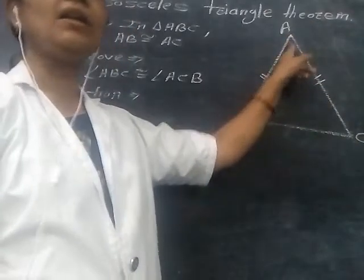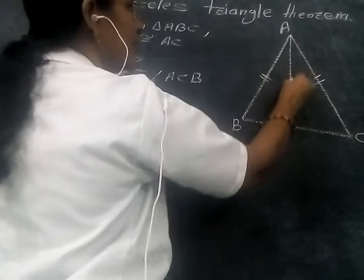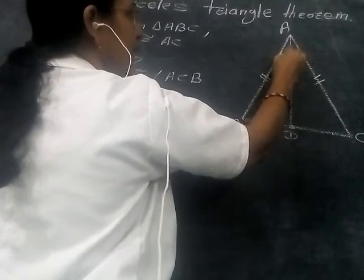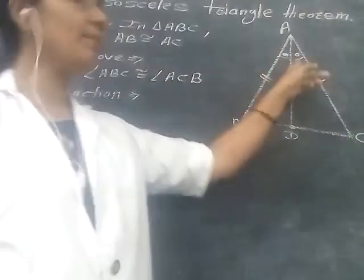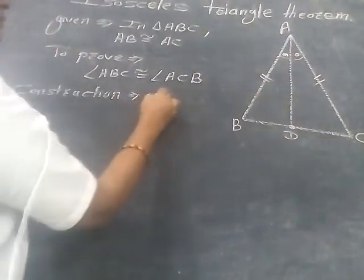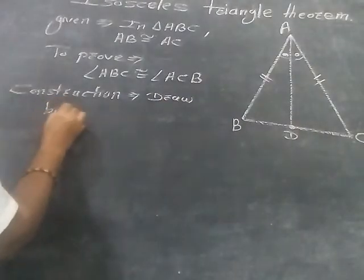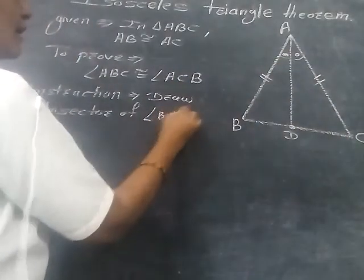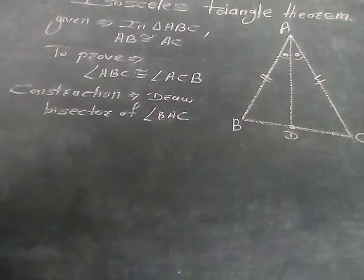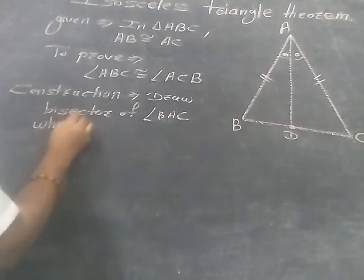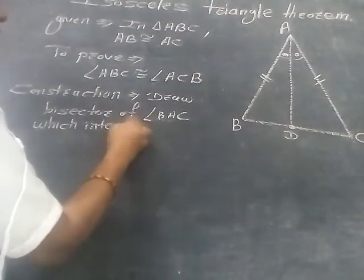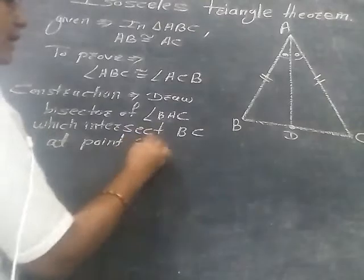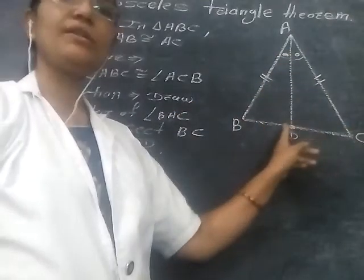This is angle BAC. So we bisect this angle. Suppose this is the bisector, which intersects BC at point D. This is the bisector, so these two angles are congruent because this is the bisector. So here we write: draw bisector of angle BAC, which intersects BC at point D.